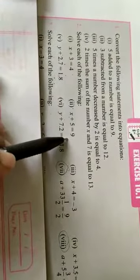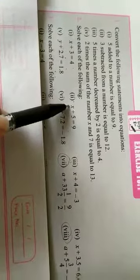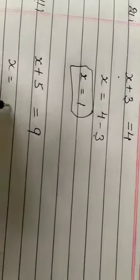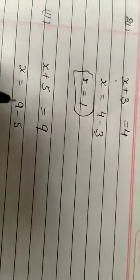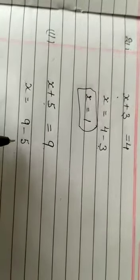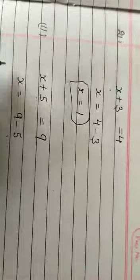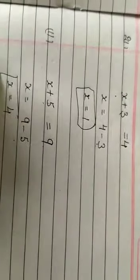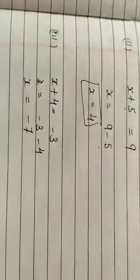Second part: x plus 5 equals 9. We have to find the value of x. Therefore, we write x equals 9 minus 5. This 5 becomes negative when we take it to the right hand side of the equation. We get 9 minus 5 equals 4, therefore the value of x equals 4.